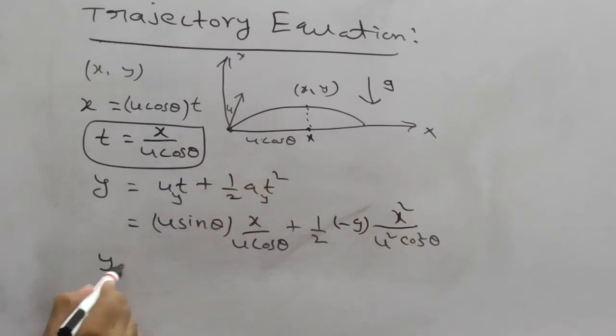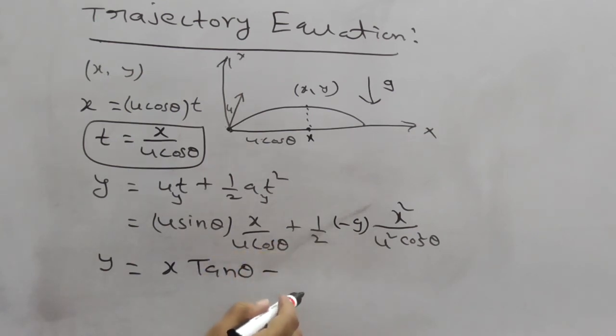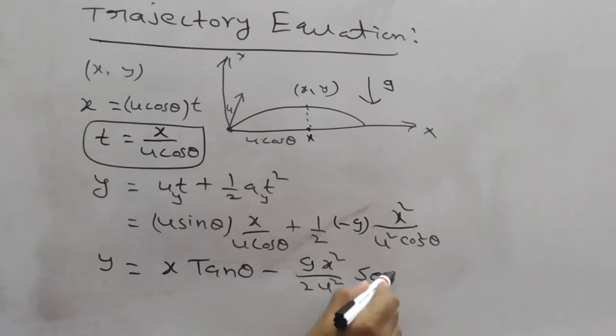Now y is equal to u and u gets cancelled. x sin by cos gives tan theta minus, plus half minus, minus g x square by 2 u square. This is 1 by cos square theta. The 1 by cos square theta is nothing but secant square theta.